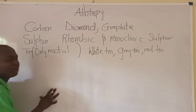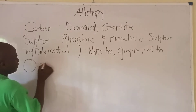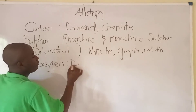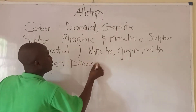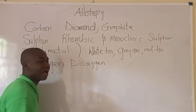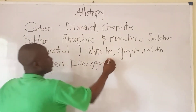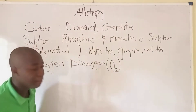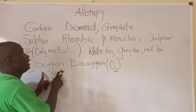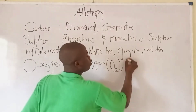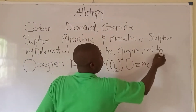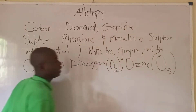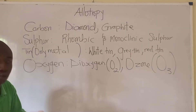Let's talk about other elements like the likes of oxygen. Oxygen exists in two allotropic forms. The first is dioxygen — that means two atoms of oxygen, so the symbol becomes O2. The other allotropic form of oxygen is called ozone, which contains three atoms of oxygen.